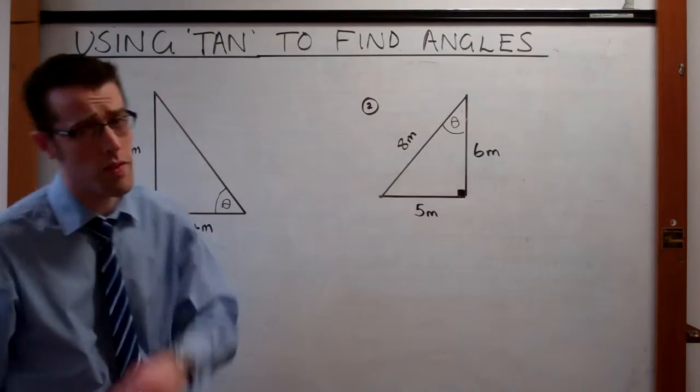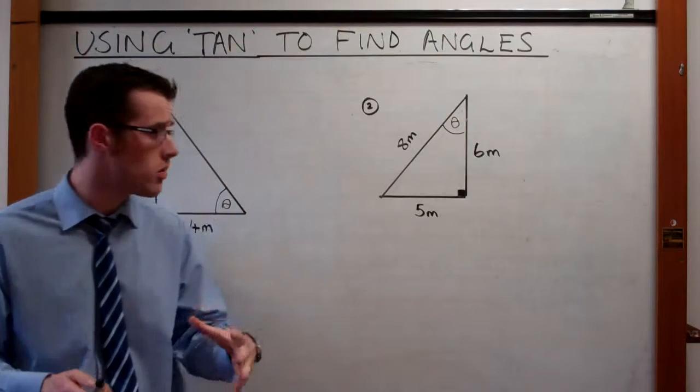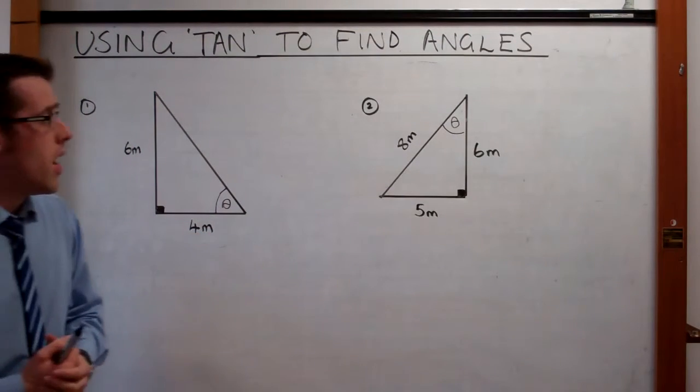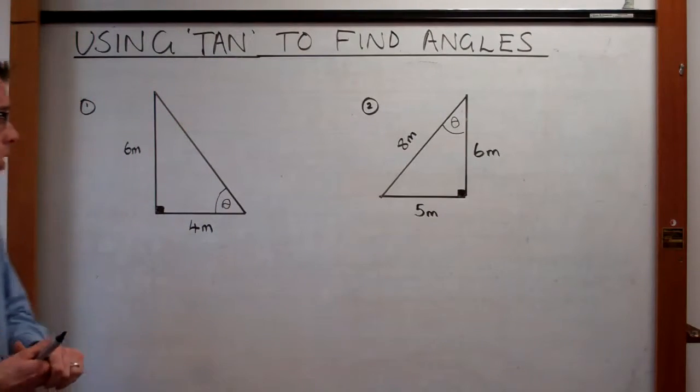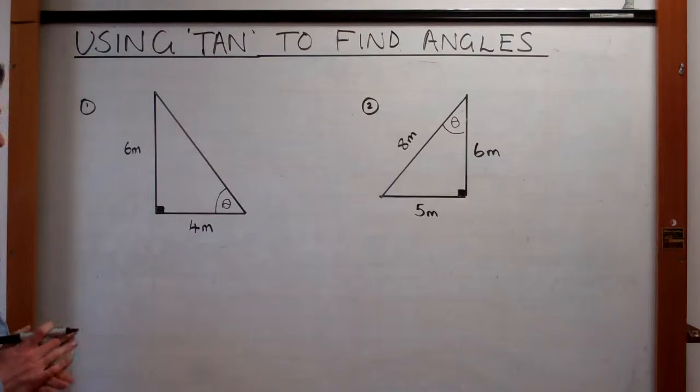Welcome to the video on how to use tan to find angles in right-angled triangles. Up to now, we've been able to find sides using the tan ratio - the opposite side and the adjacent. Now we're going to look at how we use tan to find an angle in any right-angled triangle.